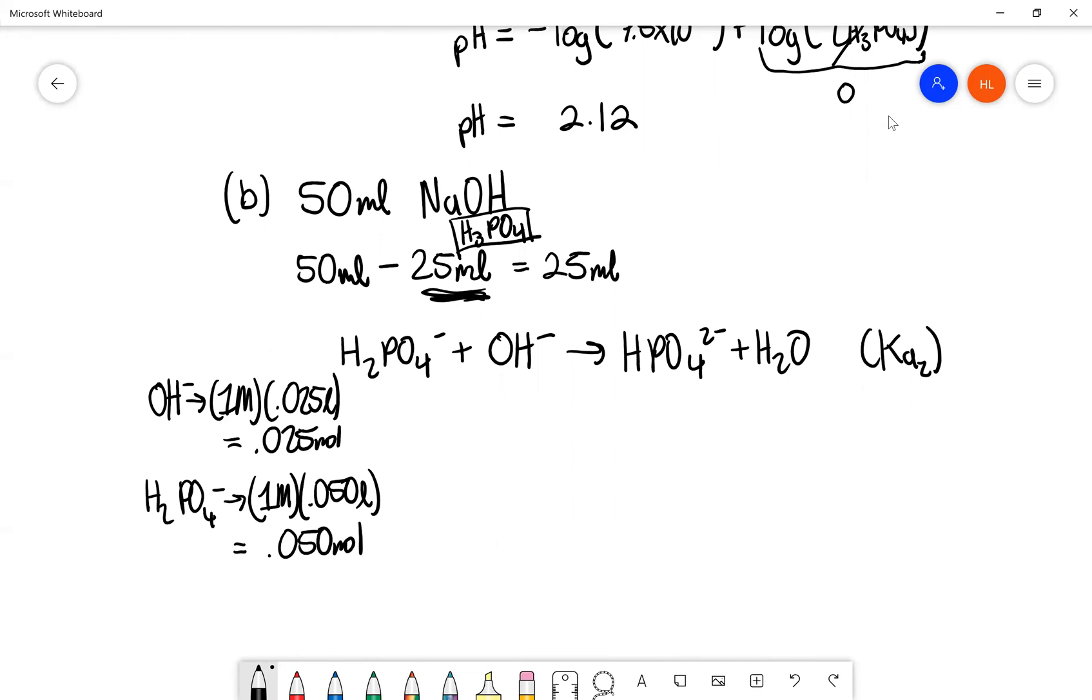So this is 0.050 moles. And we can plug this into the equation. 0.025 moles, 0.050 moles. And subtract from the reactant side, the amount of moles that is being neutralized by this acid in this time. So we get 0.025 moles, 0, and of course we're adding to this side 0.025 moles. And we get 0.025 moles.